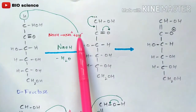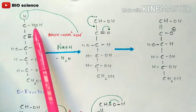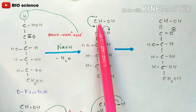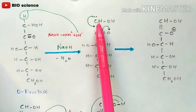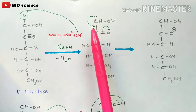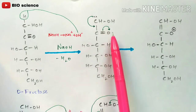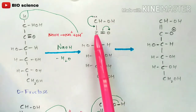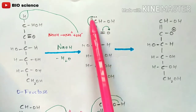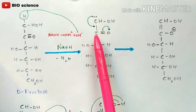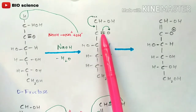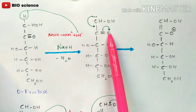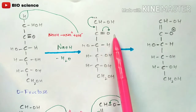The OH⁻ and H leave as water. Now what remains at the first carbon is a carbanion with a lone pair. There is a C=O double bond present. The lone pair electrons on the first carbon form a bond between the first carbon and the second carbon, creating a double bond there. Simultaneously, one bond of the existing double bond shifts to the oxygen atom, forming a lone pair that gives it a negative charge — acting as an anion.